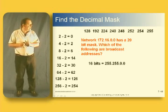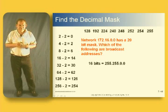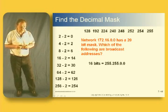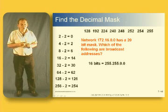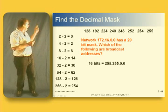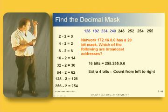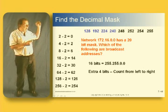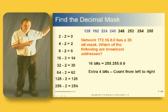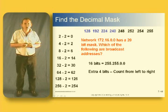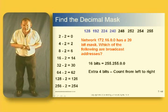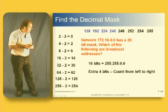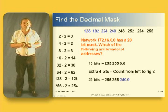Okay, so 16-bits is 255.255.0.0 plus an extra 4-bits and what we're going to do is count across the top from left to right. So we go 128, 192, 224, 240. So now we know what the decimal mask looks like. A 20-bit mask is 255.255.240.0.